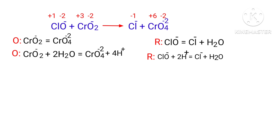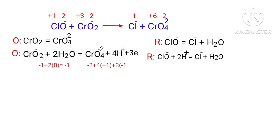For a redox reaction, the total charges must be equal on both sides. In the oxidation half reaction, both sides are not equal. To make them equal, add 3 electrons to the right side to make it equal to -1. Now the charges are balanced in the oxidation half reaction.